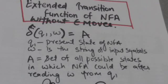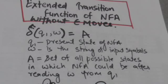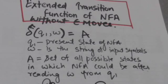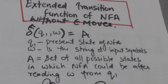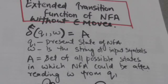Hello friends, welcome back. In this tutorial we will study about the extended transition function of NFA without empty moves. The normal transition function gives the transition of finite automata for a single input symbol, whereas the extended transition function gives the transition of finite automata for a string of input symbols, in case of NFA without empty moves.